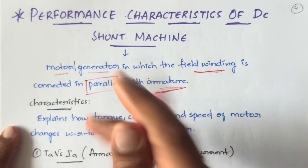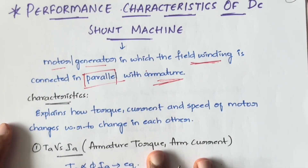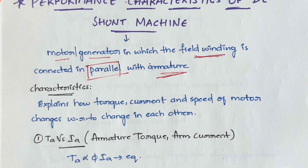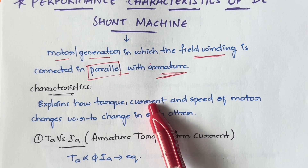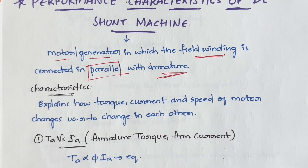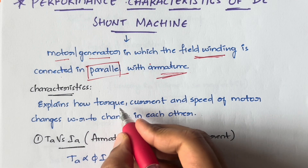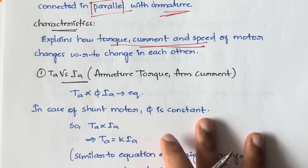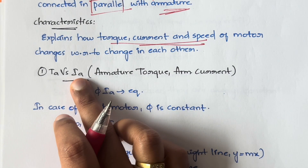Performance characteristics means how torque, current, and speed of the motor change with respect to each other — when torque changes, what happens to current; when current changes, what happens to speed; when speed changes, what happens to torque. How these three depend on each other is what you will learn in this video. This is also going to be a very short video. First: armature torque versus armature current — Ta is armature torque, Ia is armature current.